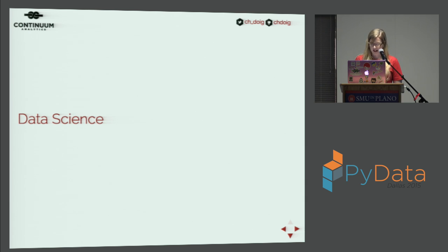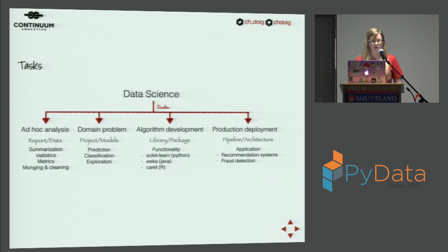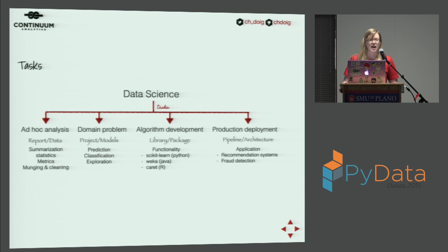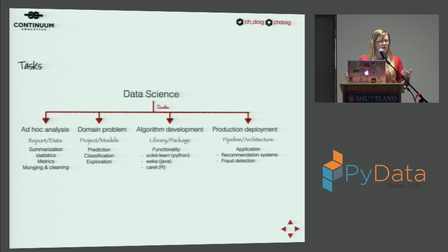Let's start with data science, focusing on the tasks involved. We can classify the different tasks into four areas. The first I call ad hoc analysis — your output is some kind of report, data cleaning, summarization, metrics, and data output. Then we have the domain problem task, where you apply data science to solve a specific problem: prediction, classification, or exploration. The output of that is a project or a model.